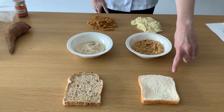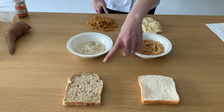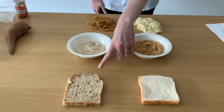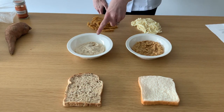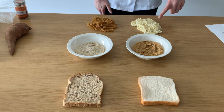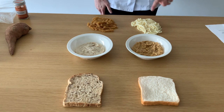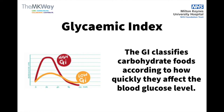A couple of swap ideas might be to swap white bread for granary bread, to swap cereals such as cornflakes for porridge, or to swap white pasta for whole wheat pasta. Hopefully today has given you lots of food for thought. If you would like more information following this clip, you can request an appointment to see a diabetes dietitian through the Milton Keynes diabetes team.